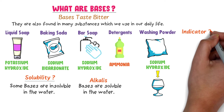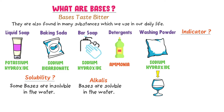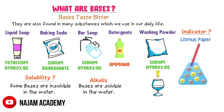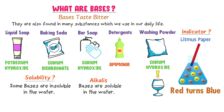Now, what about the indicator test of bases? Again, we can use different indicators to test the presence of bases, but the simple test is litmus paper. Bases turn red litmus paper blue. Thus, remember that bases taste bitter. Different substances which we use in our daily life contain different types of bases. Bases that are soluble in water are also called alkalies, and bases turn red litmus paper blue.